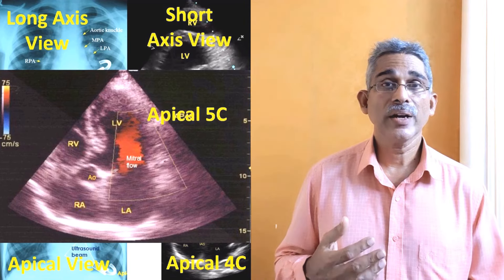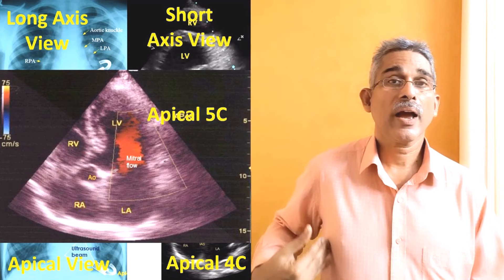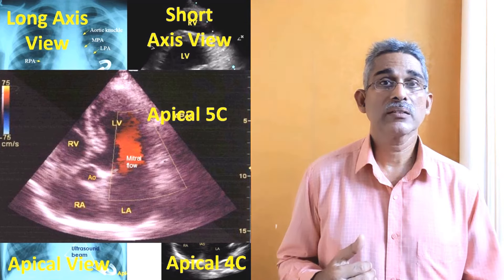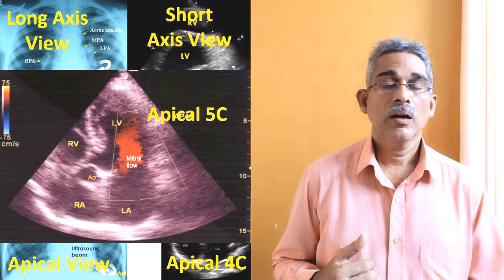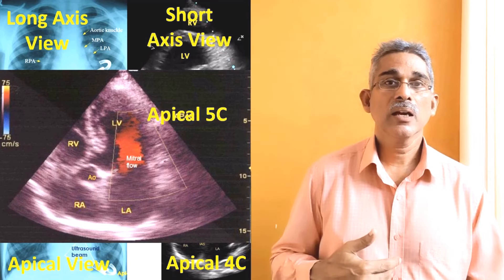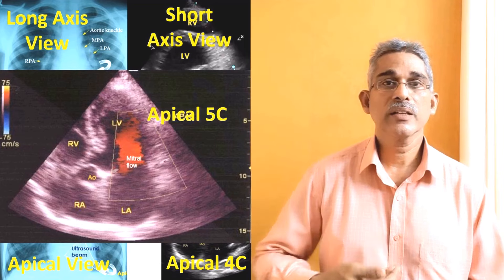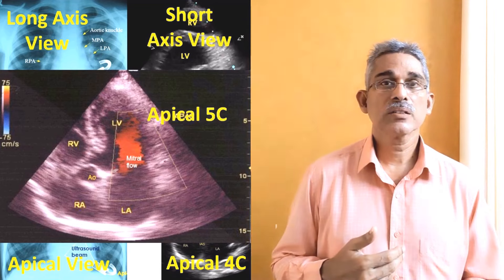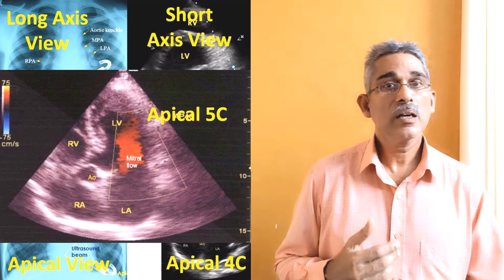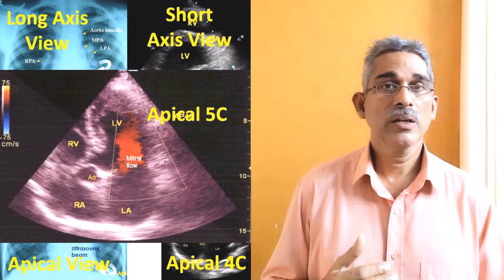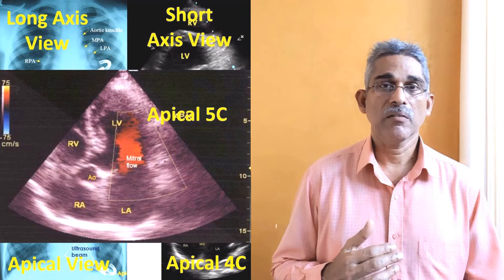On other occasions you may use an axillary view to image the inferior vena cava. The usual imaging of the inferior vena cava is done from the subcostal view — you direct the beam upwards to see the lower part of the heart including the inferior vena cava. But when the chest is opened after thoracic or upper abdominal surgery and there is a dressing, you cannot image from the subcostal view, so you go for the axillary view and direct the beam towards the inferior vena cava from the axilla.